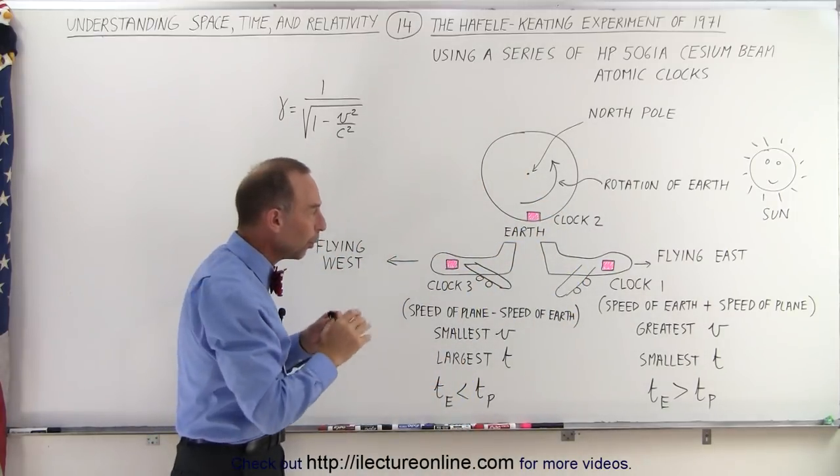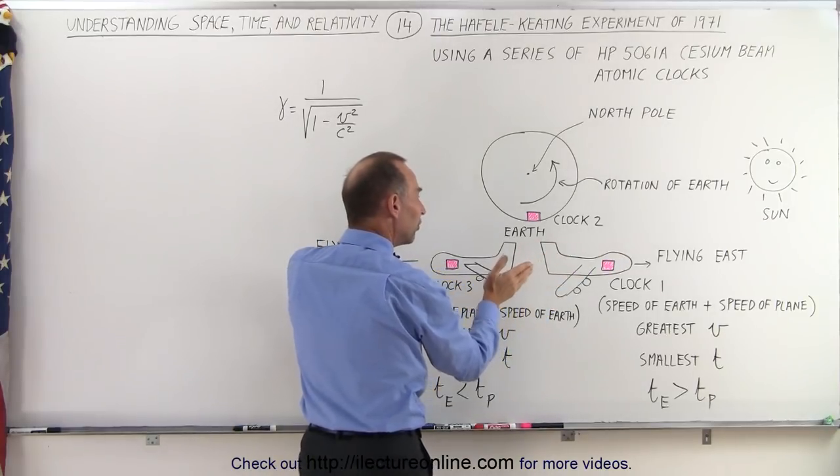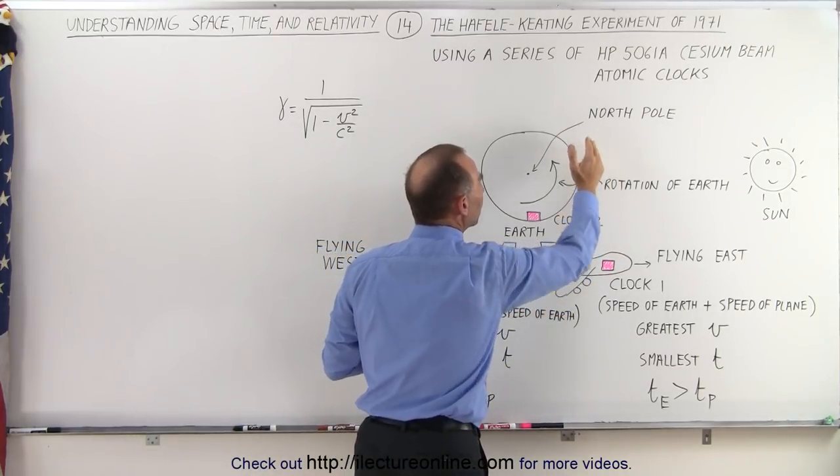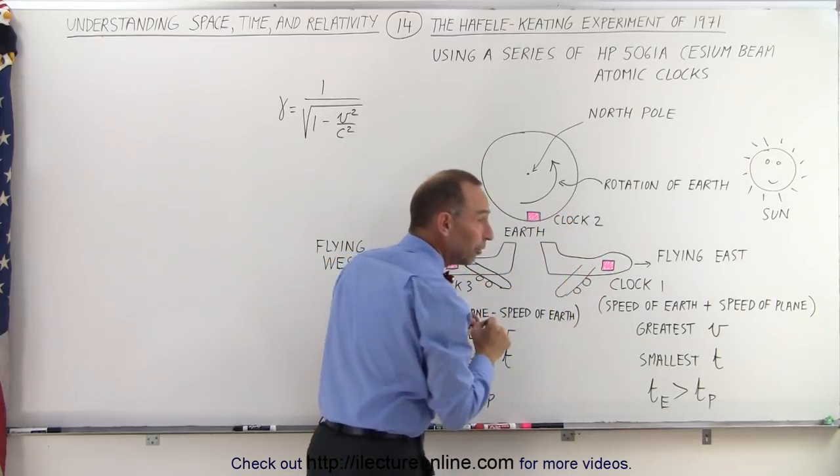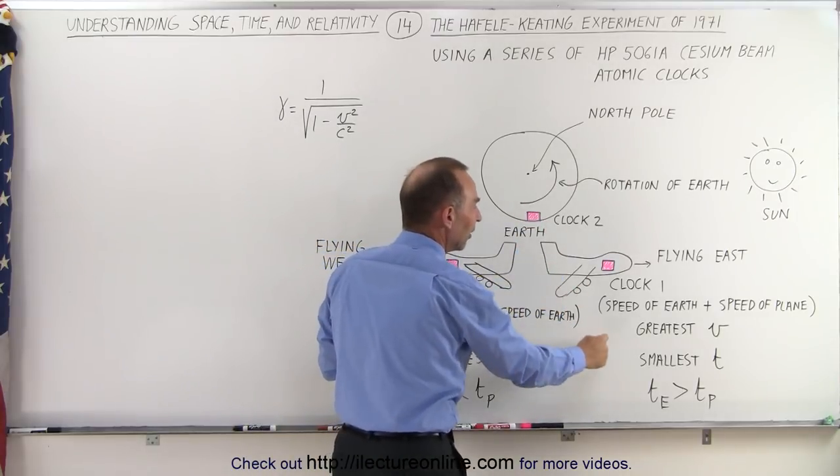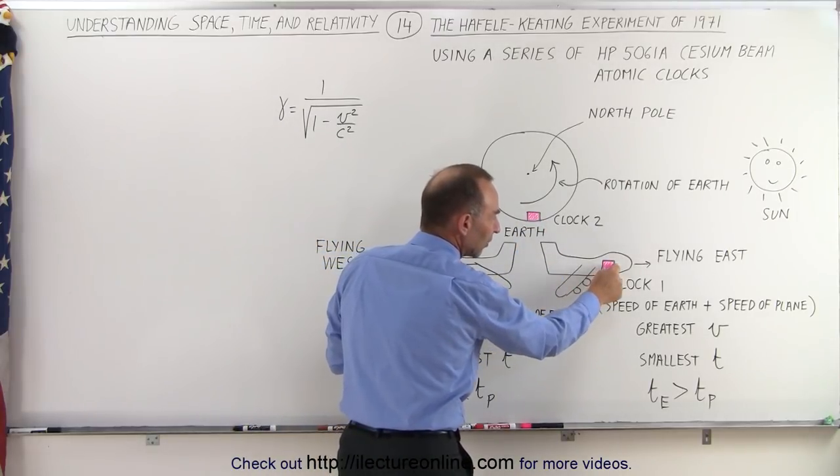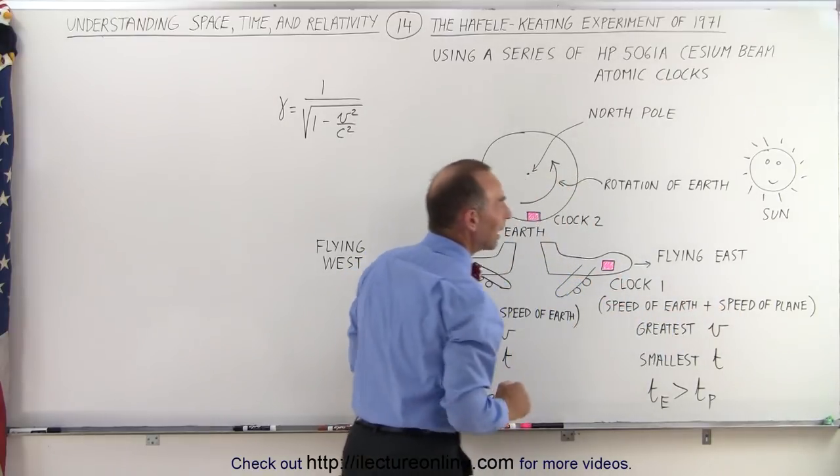What they did was take one plane and make it fly eastward. In other words, it would fly along with the rotation of the Earth, and since the velocity of the plane is relative to the velocity of the Earth, the total velocity would be additive. The speed of the clock on the plane equals the speed of the Earth plus the speed of the plane.